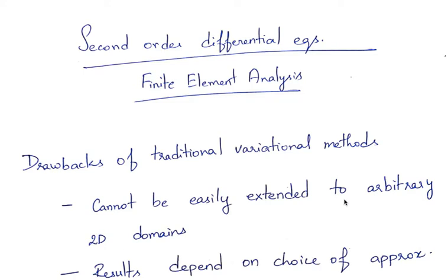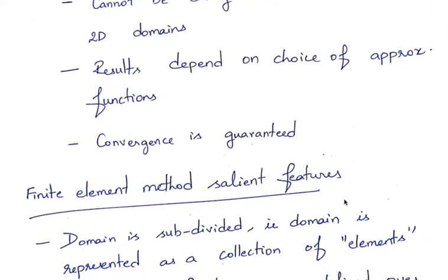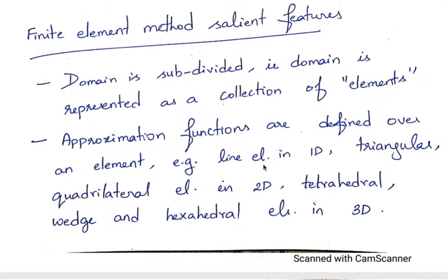Overview of what we have covered in the last class: I started by giving you details about some salient or important features of the finite element method. The first feature is that whatever is the domain of analysis is divided into something called elements. The approximation functions in FEM are defined over each element — for example, in 1D it is a line element, in 2D triangular or quadrilateral elements.